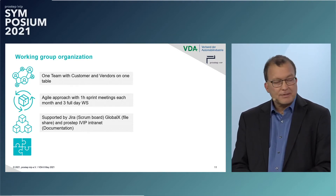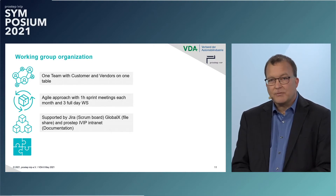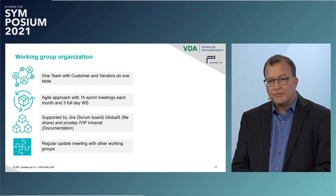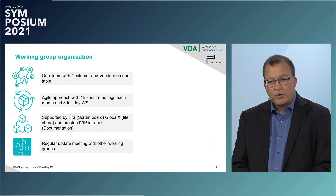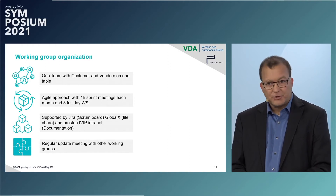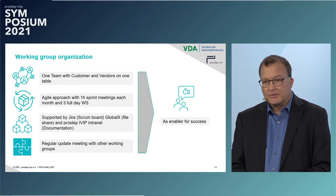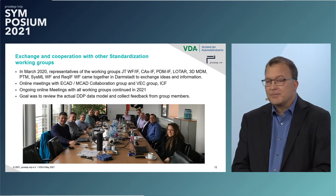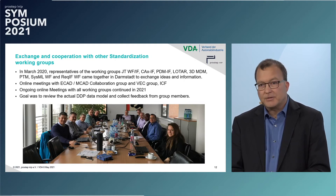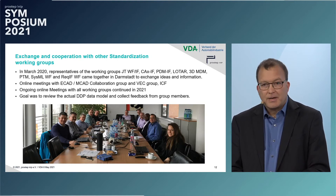The working group is supported by equipment from the PROSTEP iVIP Association. We use JIRA for our Scrum planning and Scrum board, the Global X tool to have documents available, and also the PROSTEP iVIP intranet to share our documentation. In addition, we have regular updates with other groups working on other standards like JT, ReqIF, SysML, and so on, with a regular exchange of information. This is what makes us, in our opinion, so successful. We also have planned some kind of a JT day, perhaps at the end of the year, together with other working groups.